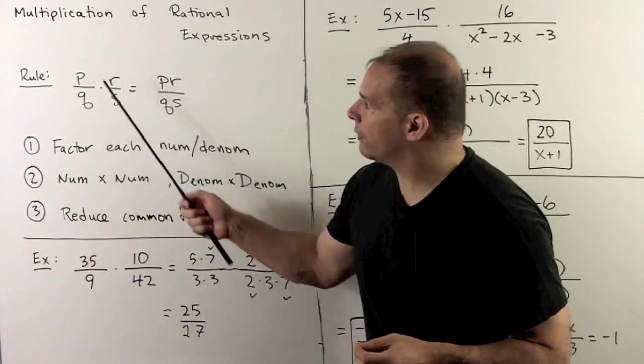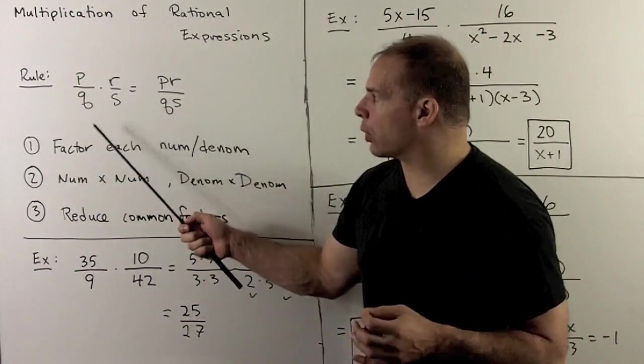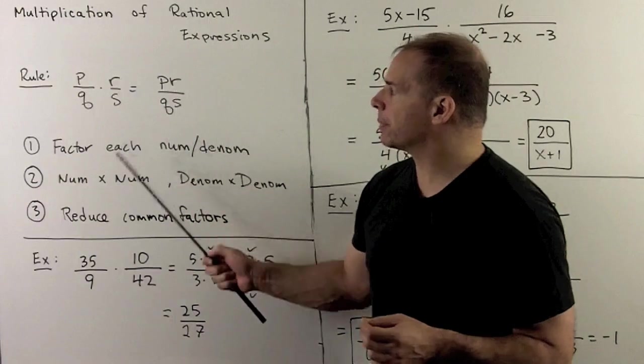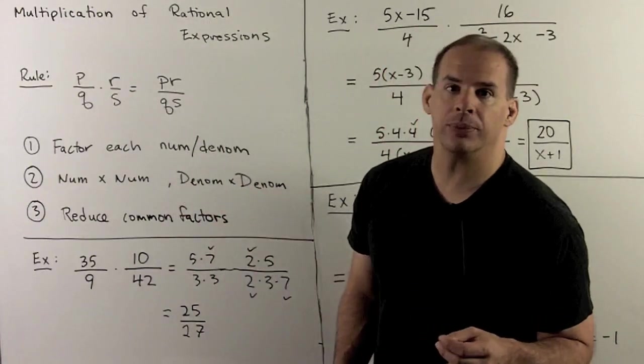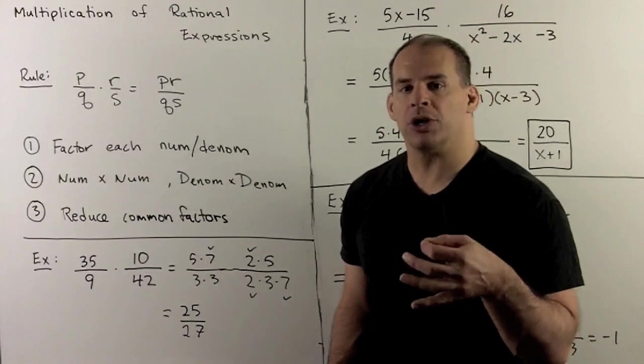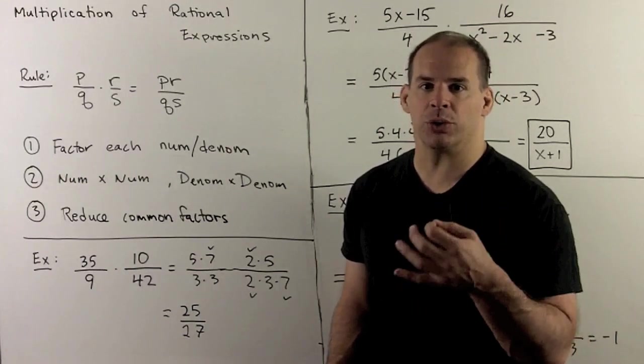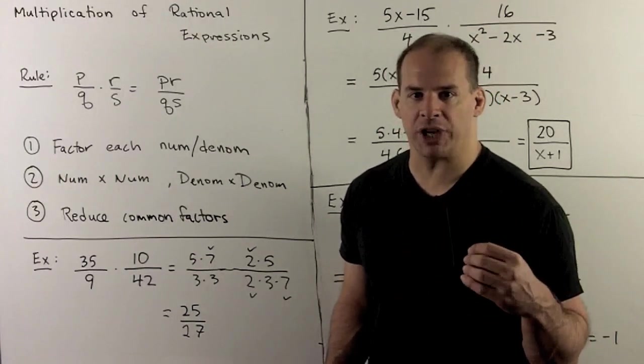Now, the rule for multiplication is straightforward. Multiply the numerators, multiply the denominators, you get your new rational expression. Of course, we're interested in simplification to reduce form, so we work that into the checklist.